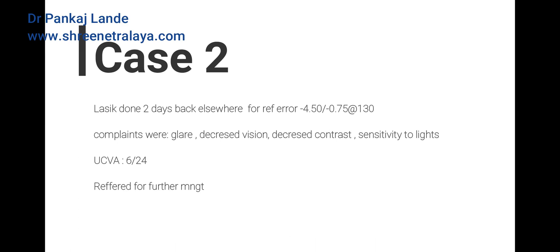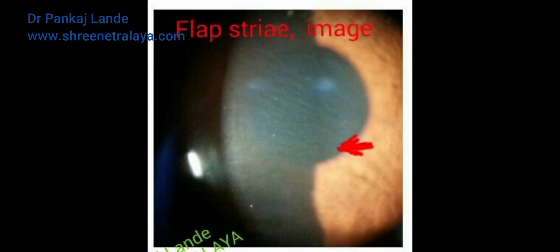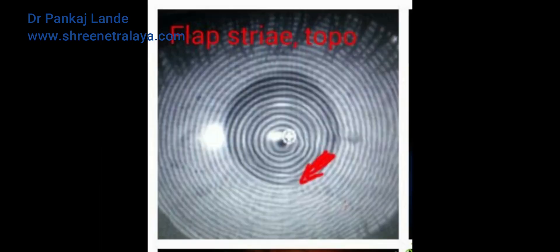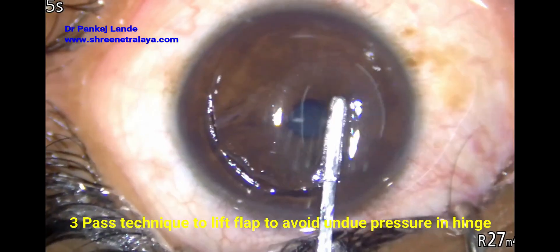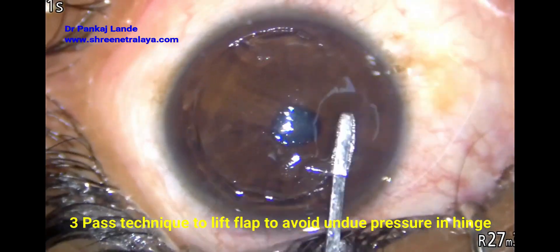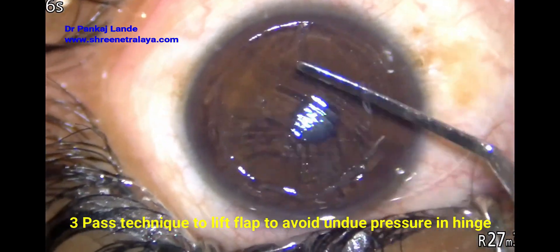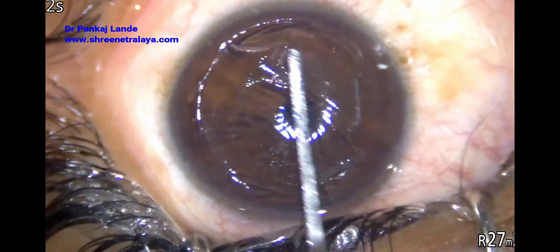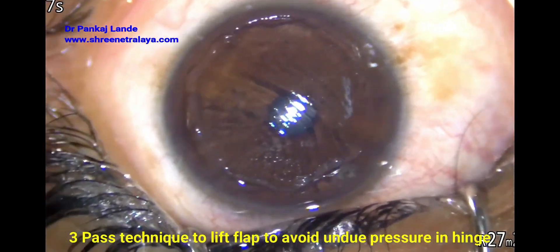This is the second case where the patient was treated and was having glare, halos, and photophobia. Similarly, LASIK flap striae were noted on slit lamp examination and the same can be demonstrated on topography using a Placido disc topographer. These images confirm the diagnosis and these cases can be taken to the OR.